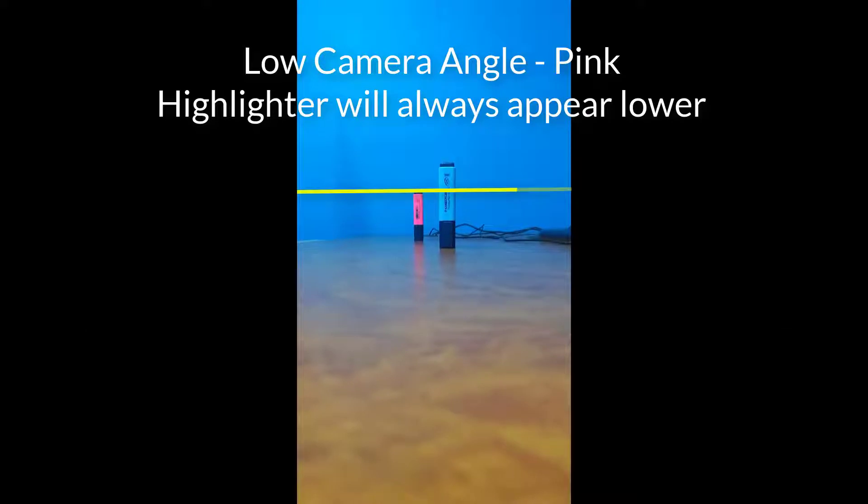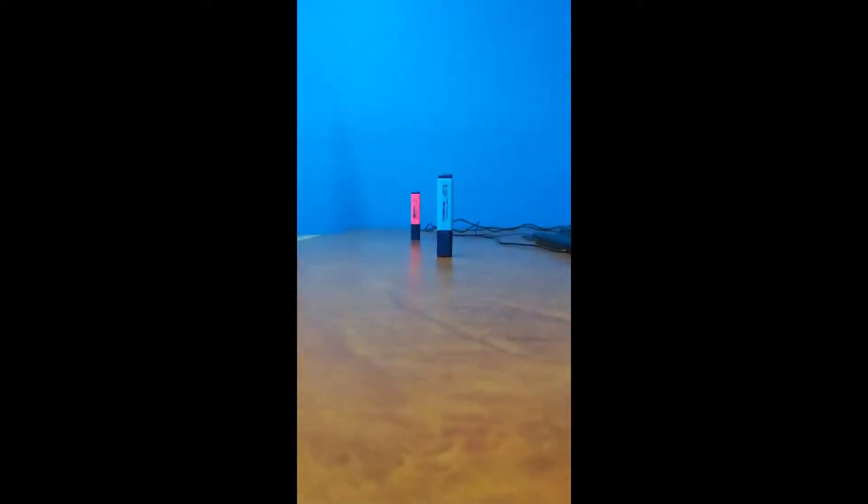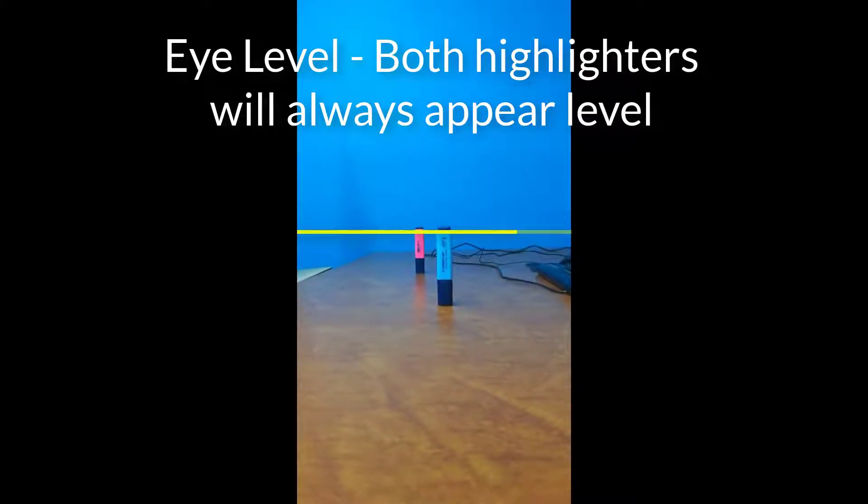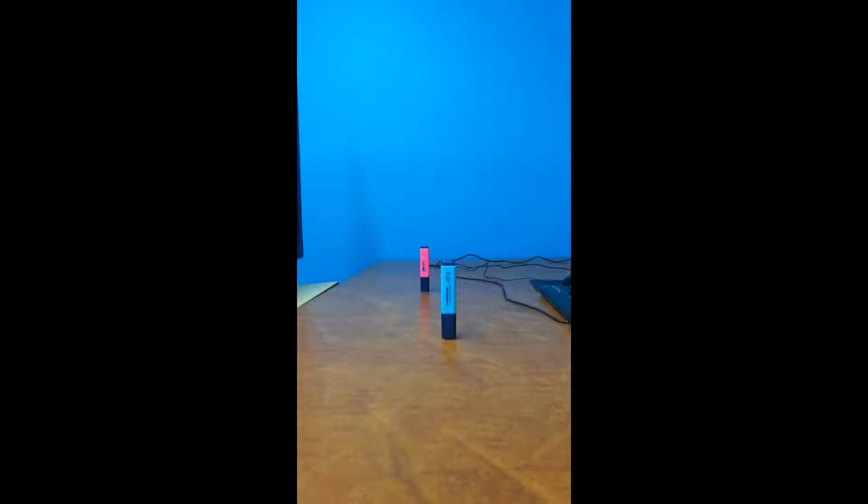So, let's go over what I mean by camera angle. If the centre of the camera lens is below the first highlighter, the second highlighter will always appear lower, provided both items are the same height, obviously.